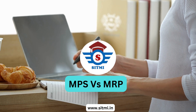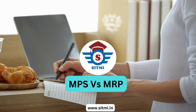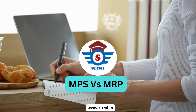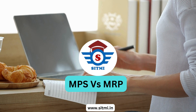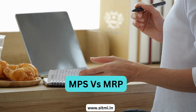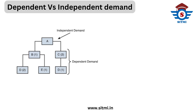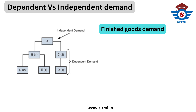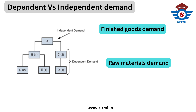In this topic we will talk about the difference between MPS and MRP, but before that let's understand what is dependent demand and what is independent demand. Independent demand is nothing but a finished good, and dependent demand is nothing but the raw material required to manufacture or produce that finished good.